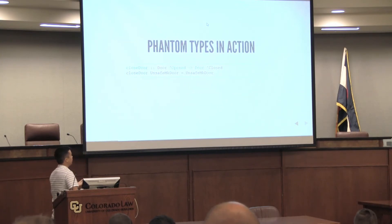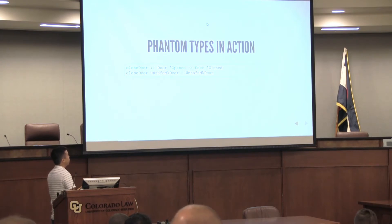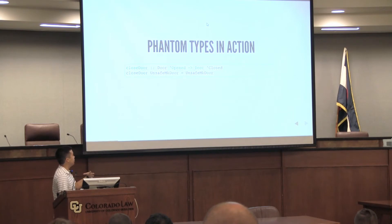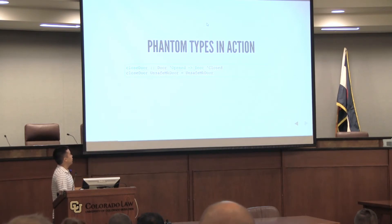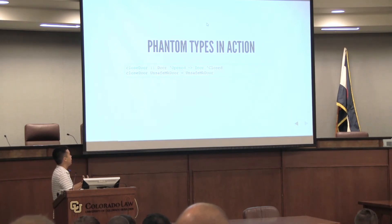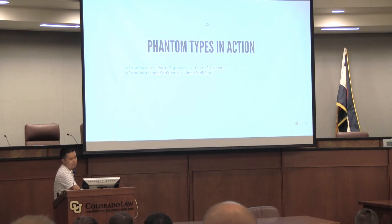This is the big usage of phantom types. If you want to close a door, you do door-open to door-closed. Here we have, using DataKinds, Open is a type that has kind DoorState. So only doors of type Door Open can be closed. If you pass in a closed door, if you pass in a Door Closed, it'll be a compile error. If you pass in an unknown state door, it'll be a compile error. If you pass in a locked door, you can't close it — it's already closed. So this function, by its type signature alone, restricts the input.